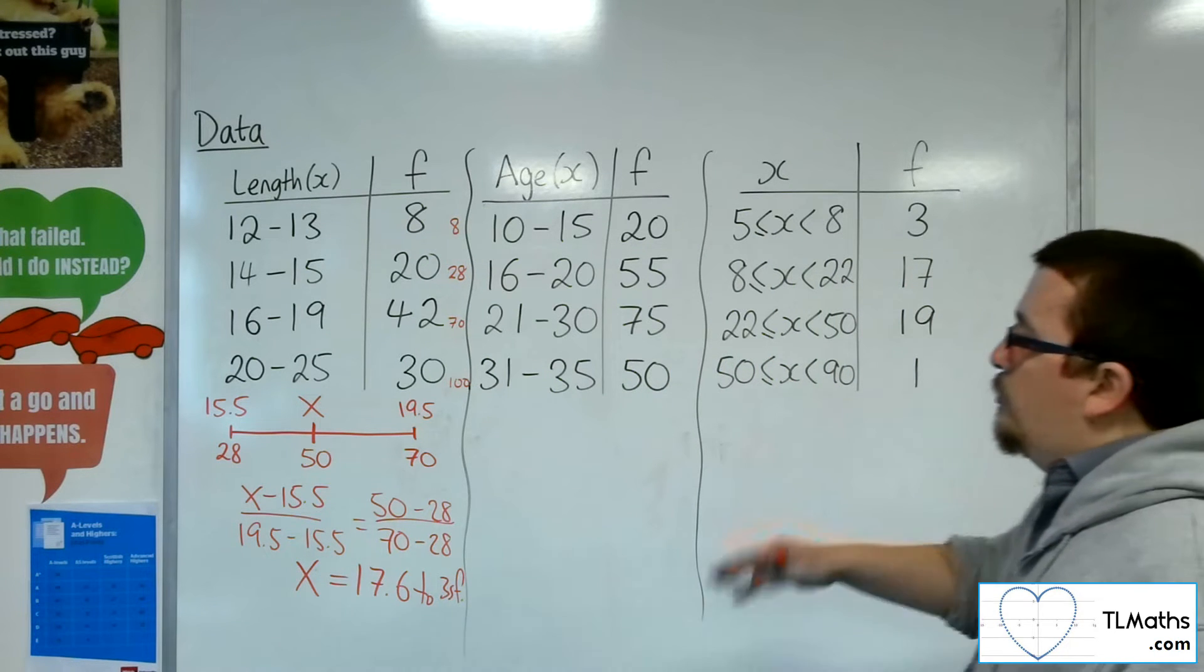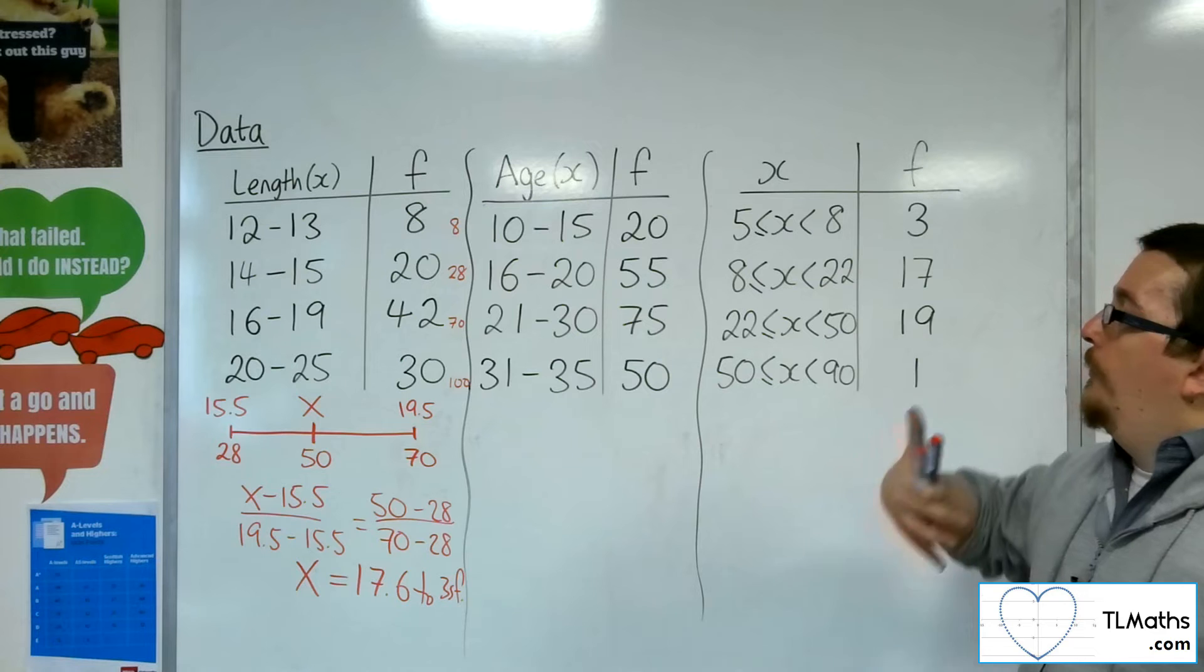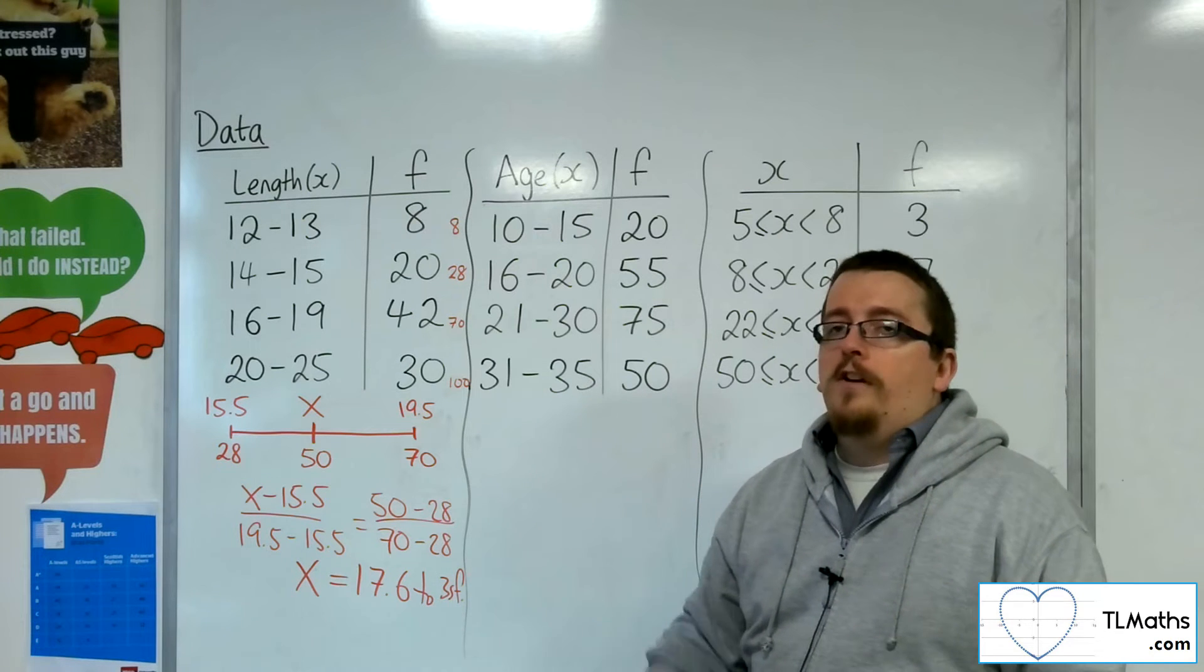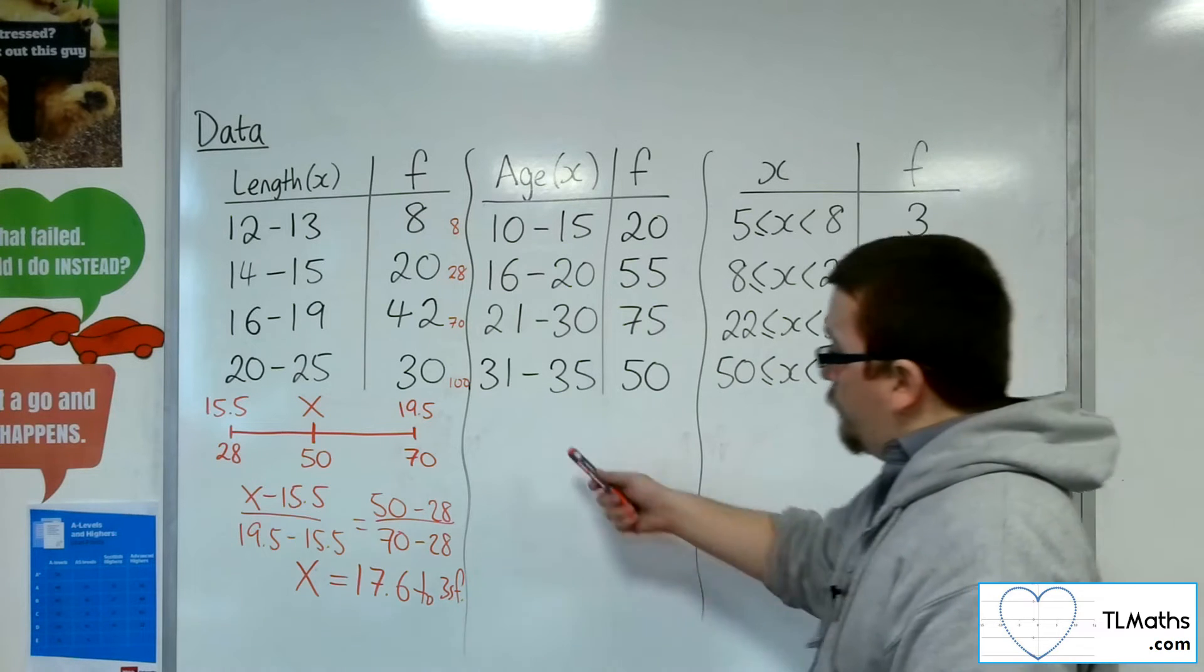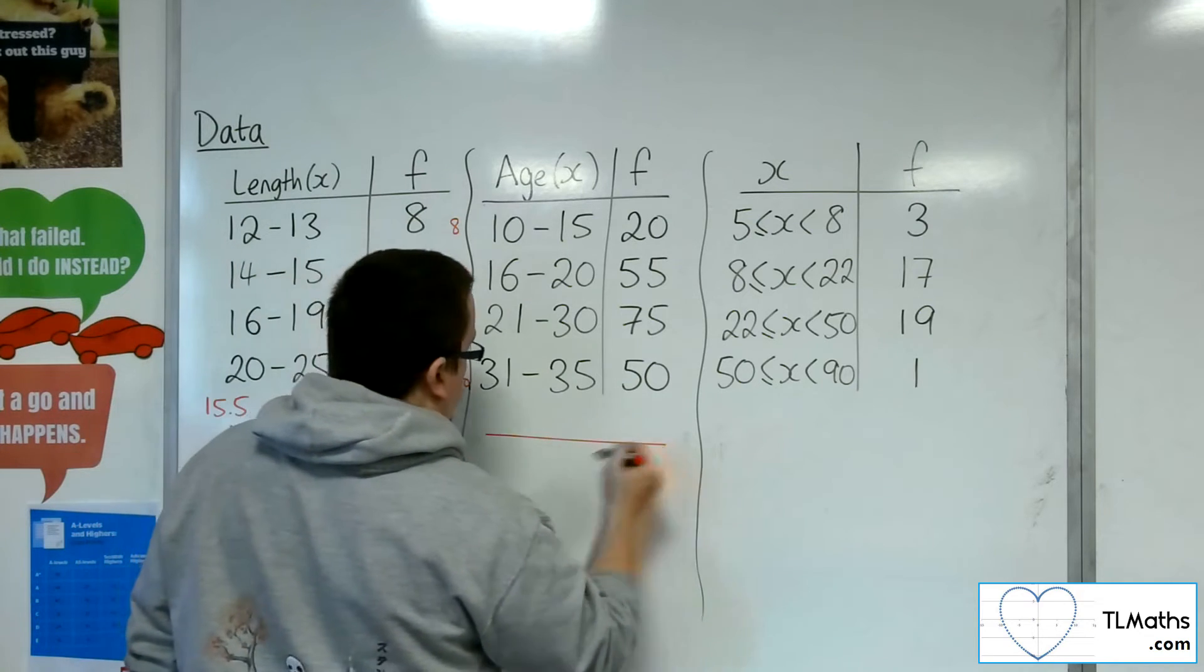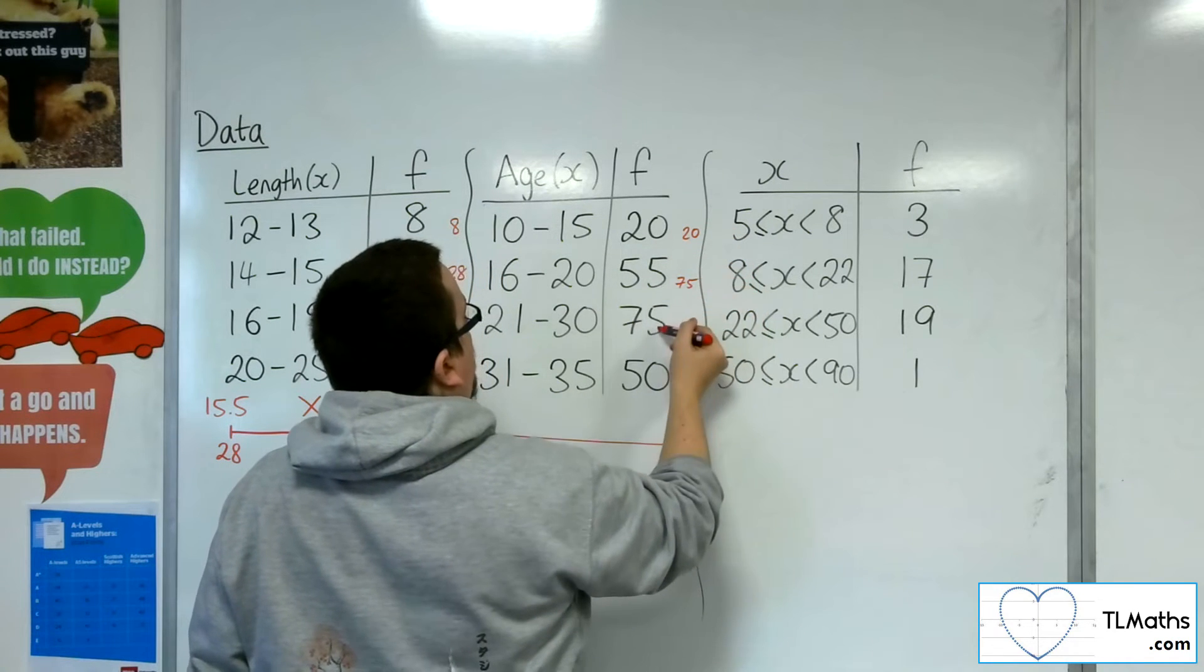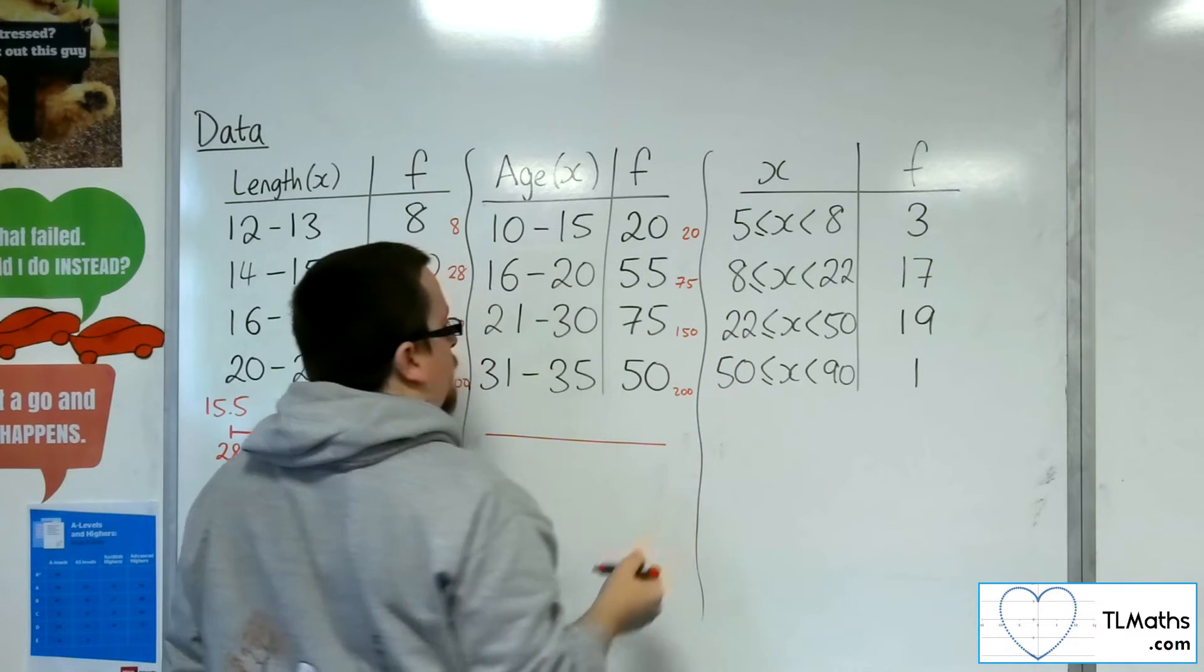Right, let's try and do the same thing now with the ages. Now remember the ages are slightly different, because we round down with ages. If you are 15.927 years old, you are still 15 years old, you're not 16. So I still need to do the cumulative frequency, but the top bits of the data on my number line will be different. So 20, add on 55, gets me to 75. 75 plus 75 is 150. 150 plus 50 is 200.